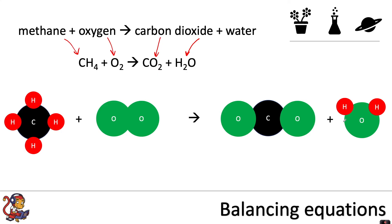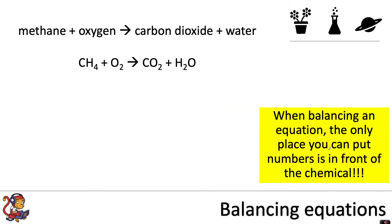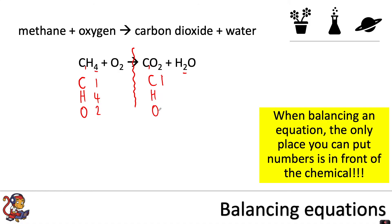Remember: the only place you can put numbers is in front of the chemical. Divide the equation with a line, write each element — C, H, O — in the same order on both sides, and count them. On the left: one C, four H, two O. On the right: one C, two H, three O (two from CO₂ and one from H₂O). Start by balancing the hydrogens. We have four on the left but only two on the right, so put a 2 in front of H₂O. That gives us four H and now two O from water.